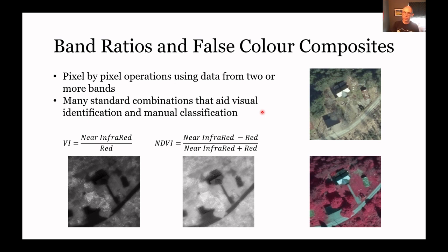But remember that on the screen, as our eyes can see it, we only have access to three basic colors: red, green, and blue. So we can't visualize more than three bands at once. We are limited to that. In this standard false color composite, we've simply shifted everything along one.